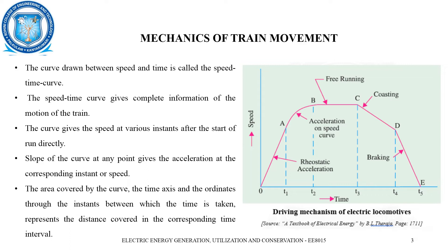The curve gives the speed at various instances after the start of the run. We can see that there are 5 sections: 0 to T1, T1 to T2, T2 to T3, T3 to T4, and finally T4 to T5. The slope of the curve at any point gives the acceleration at the corresponding instant. The area covered by the curve between the time axis and the coordinates of the instances gives the distance covered in the corresponding time interval, since we know the time and speed.